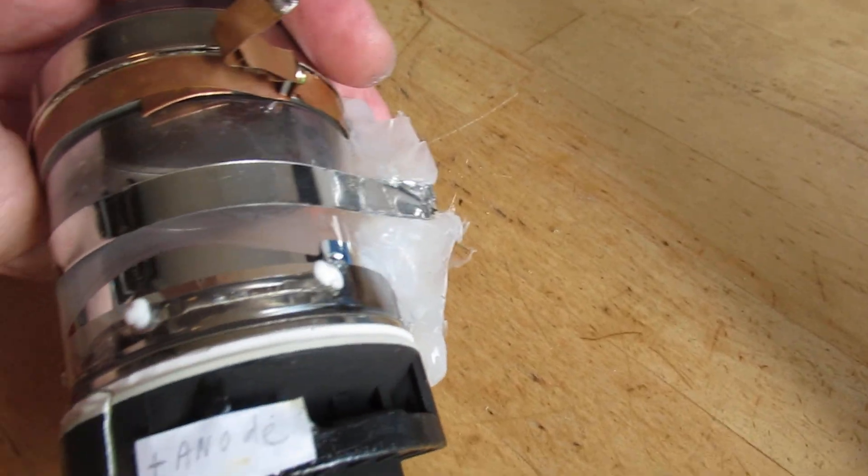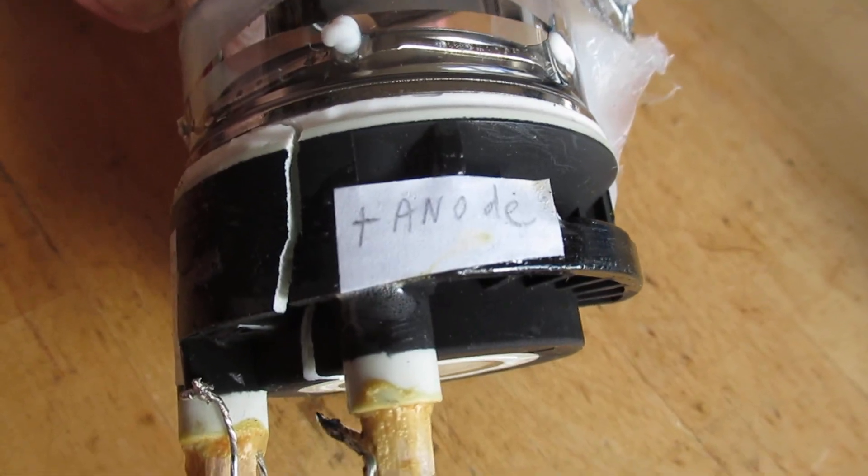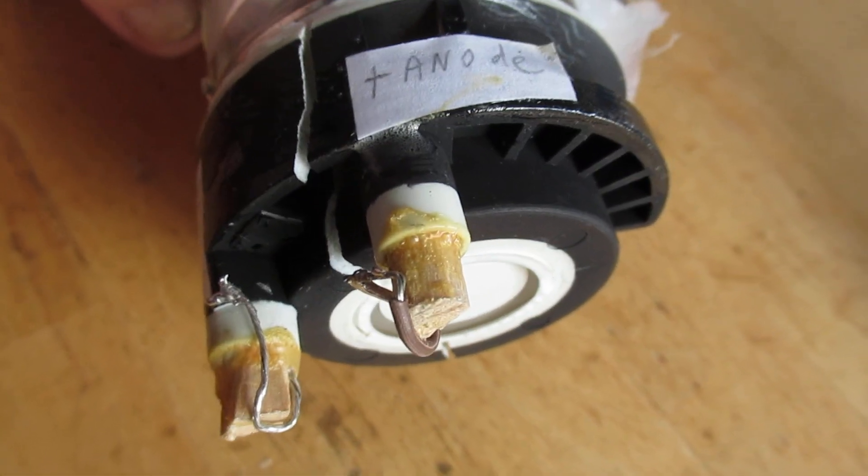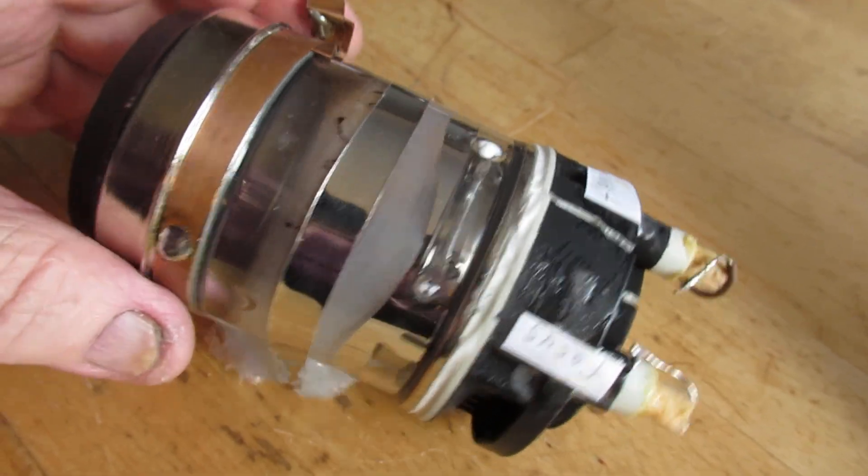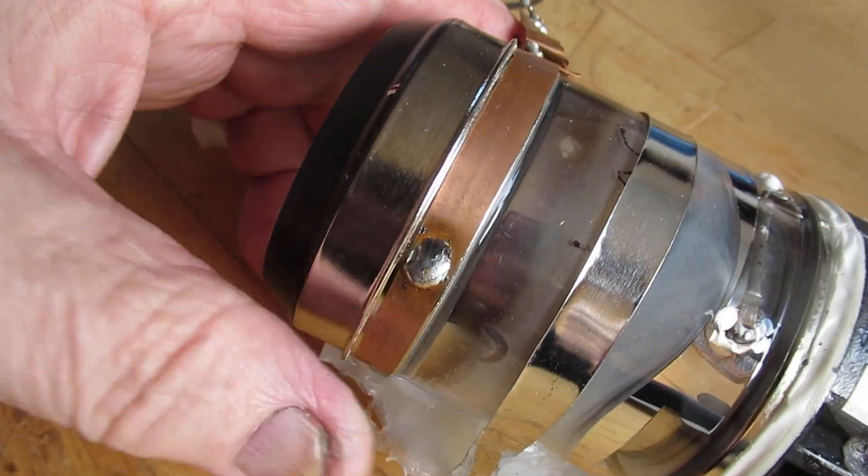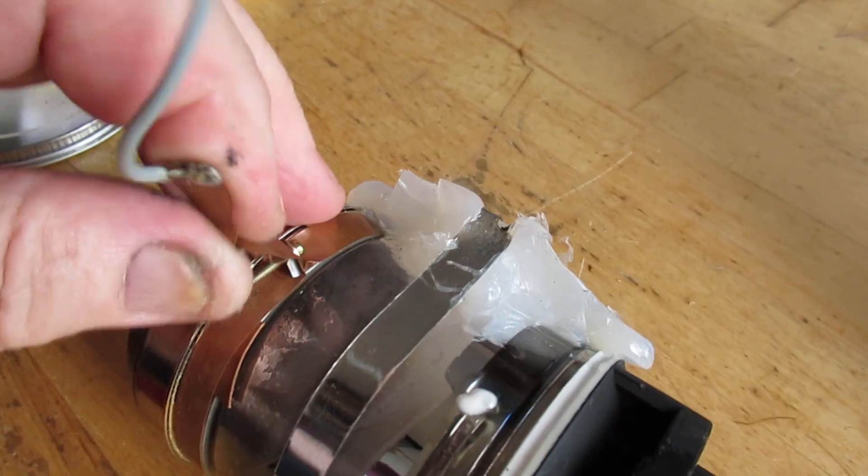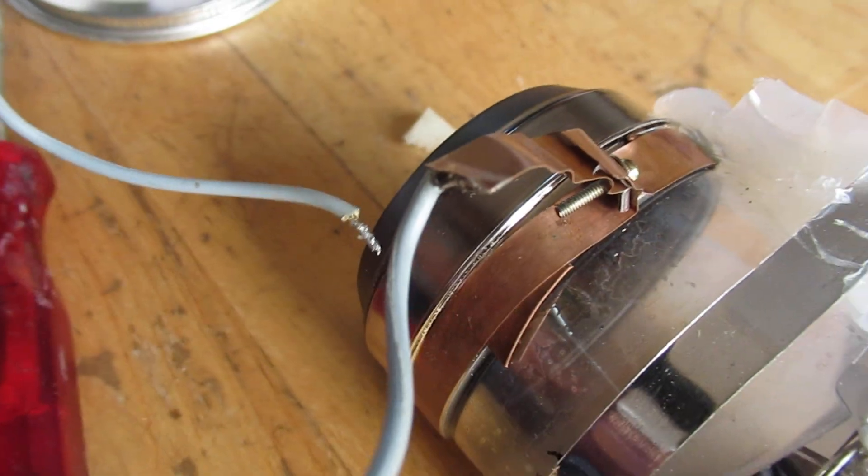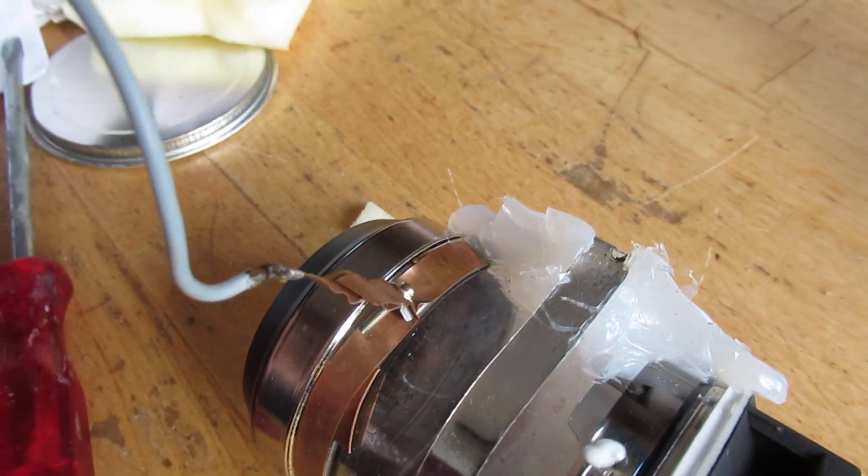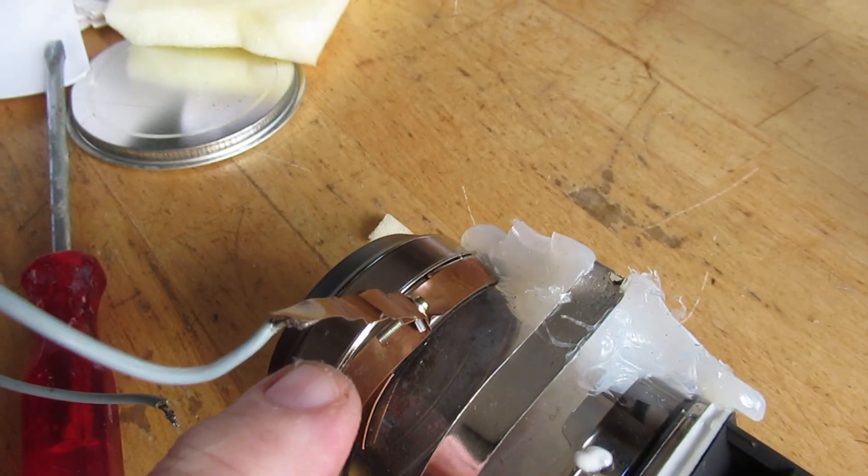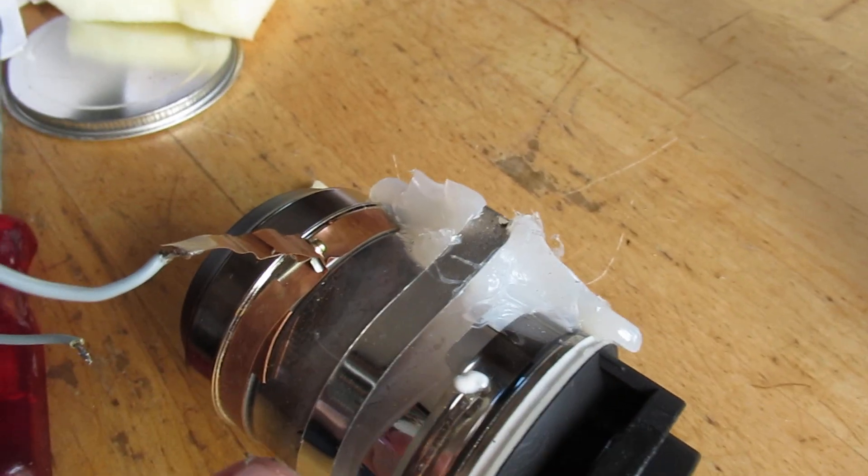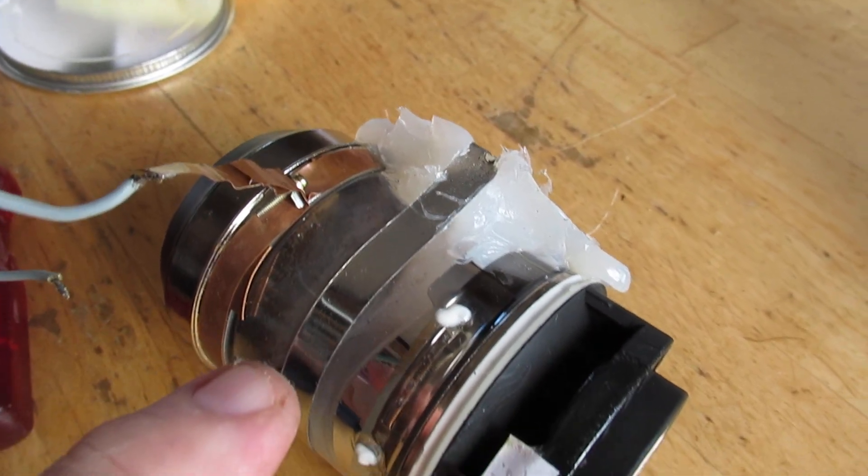And here is that anode voltage, and it has to be in a certain way very high. There is a kind of ring here, by the way, that I made to connect the right voltage to that image amplifier tube, be it positive or negative.